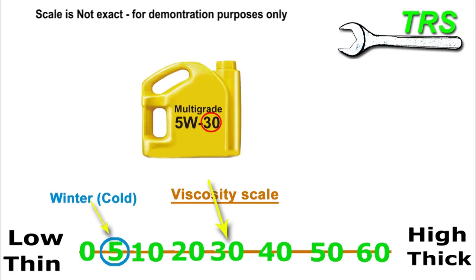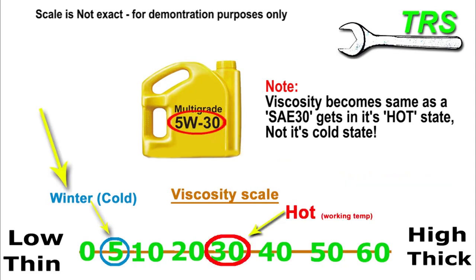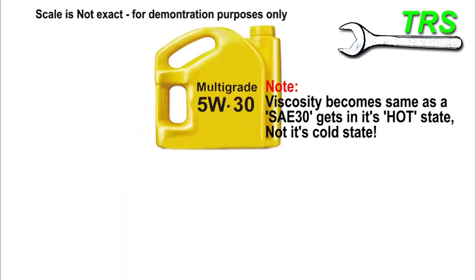But how can this oil possibly have a viscosity of 5 and a viscosity of 30? Well, this oil becomes the viscosity of 30 when the oil gets hot — so when the engine is at working temperature. This oil has special chemical ingredients that allow it to be a thin viscosity of 5 when cold, so that we can put it into a cold engine, start from cold, and allow that oil to get to all those vital parts of the engine.